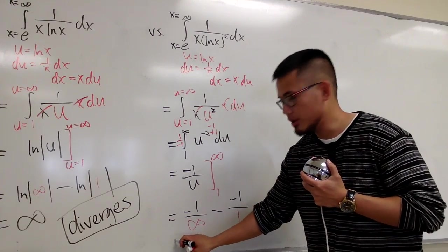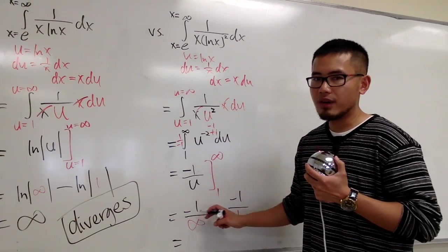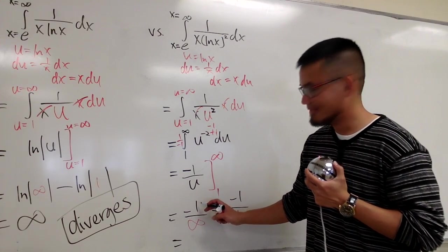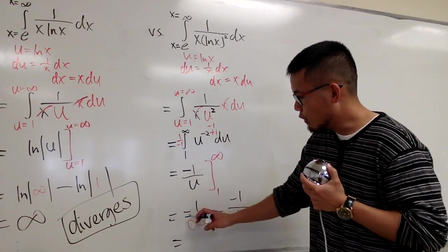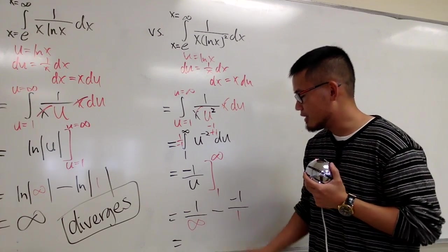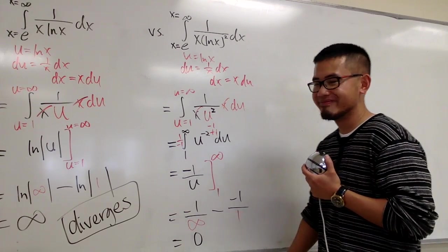So right here, when we have a number that's not infinity on the top, a non-infinity over infinity, in fact, here, we can draw a conclusion. Negative 1 over infinity, this is just going to be 0, so that's good.